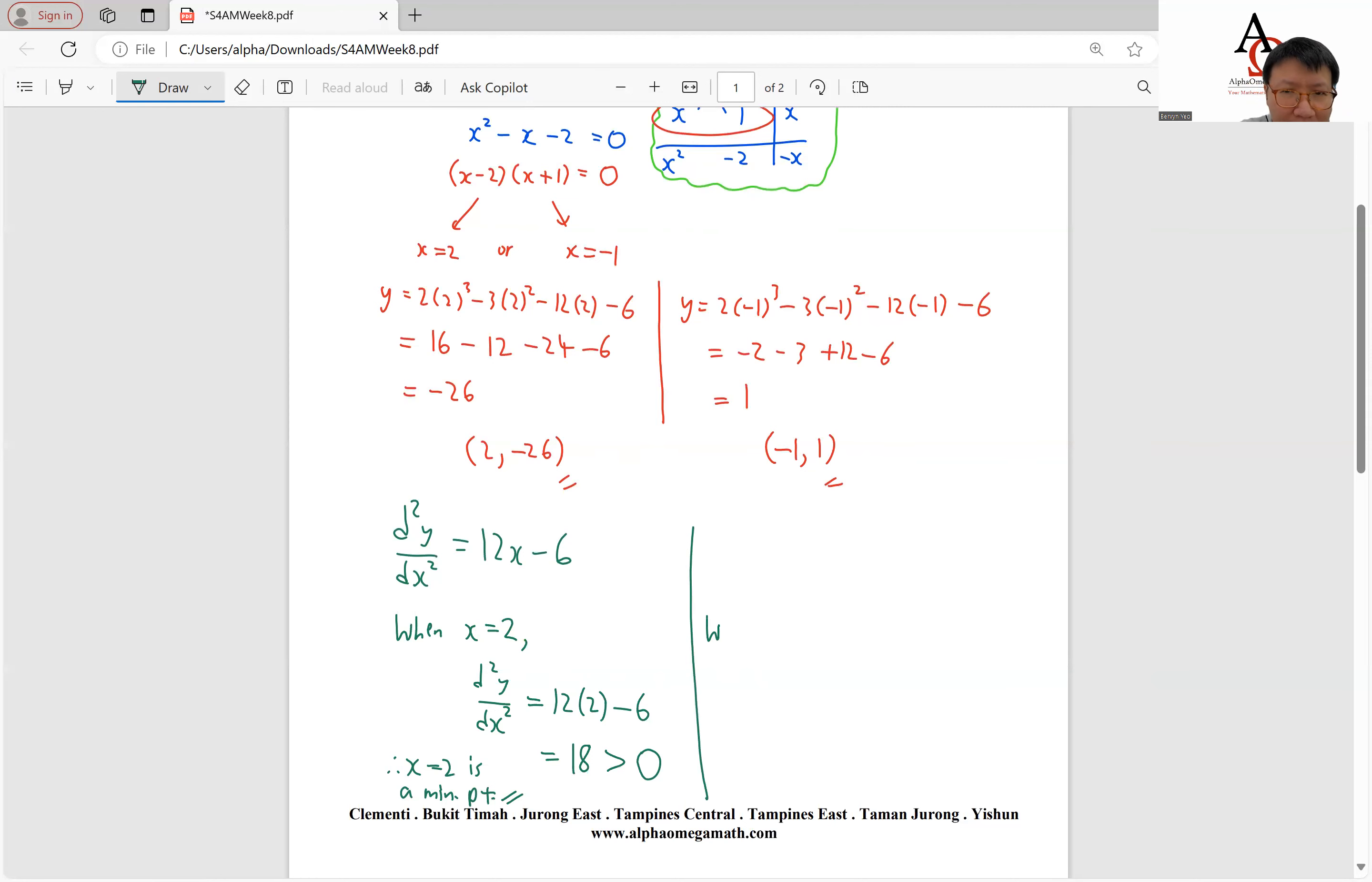Similarly, when x equals to negative 1, our second derivative will be equal to 12 of negative 1 minus 6, which gives us negative 18, which is less than 0. So with this, we can conclude x equals to negative 1 is a maximum point.